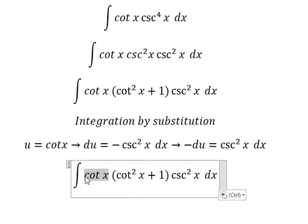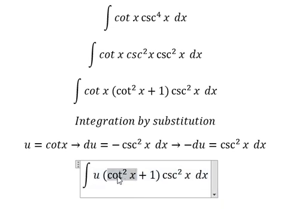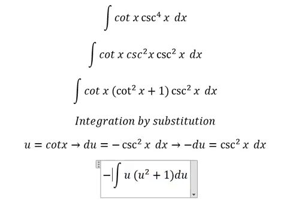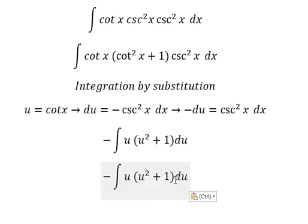We change cot x to u. Cot² x becomes u squared. Csc² x dx becomes negative du. Now we have u multiplied by u squared plus 1.